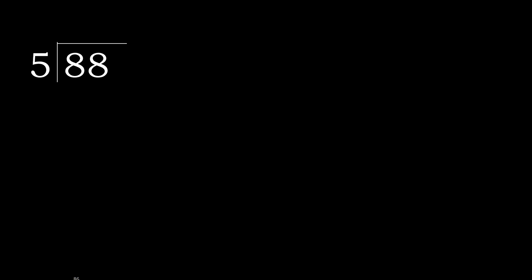88 divided by 5. 8 is not less, therefore with 8. 5 multiplied by which number is nearest to 8 but not greater? 5 multiplied by 2 is 10 — 10 is greater. 5 multiplied by 1 is 5. 5 is not greater. 8 minus 5 is 3.